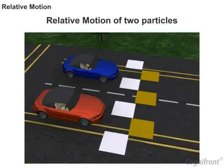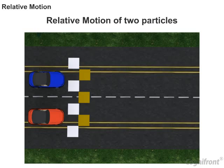Let's start our discussion with relative motion of two particles. Consider two automobiles, A and B, moving along the same road.